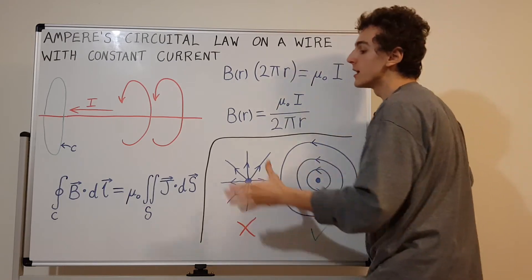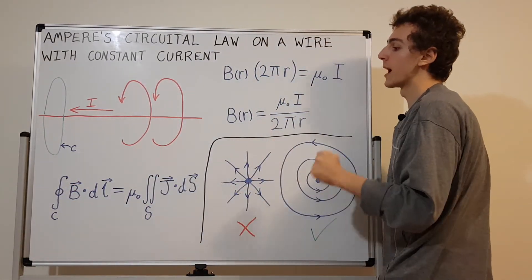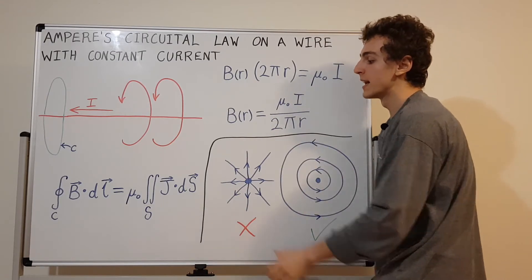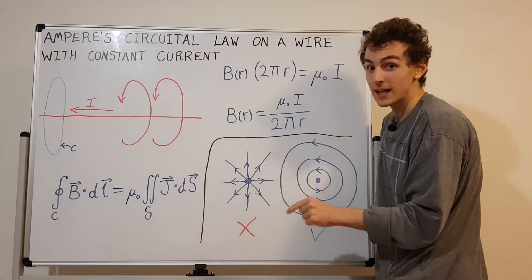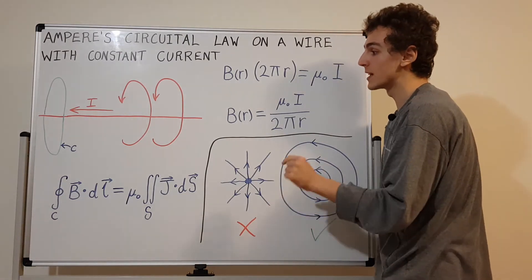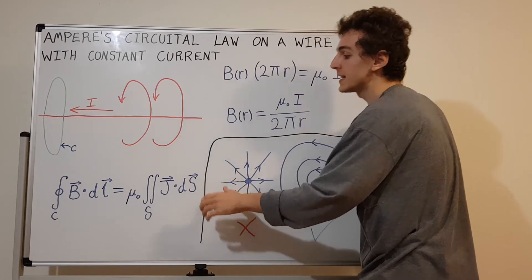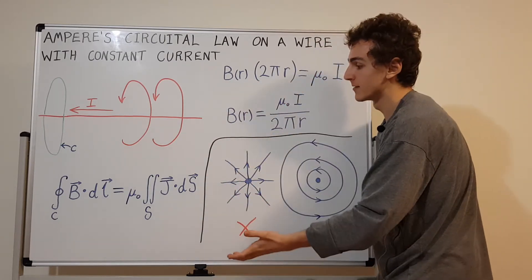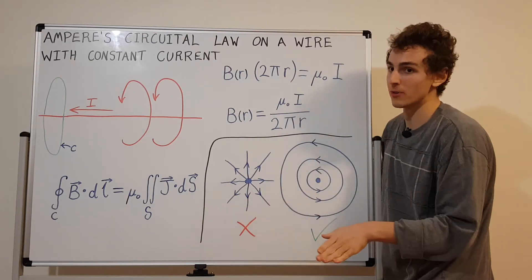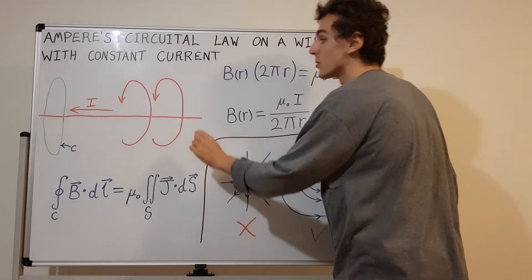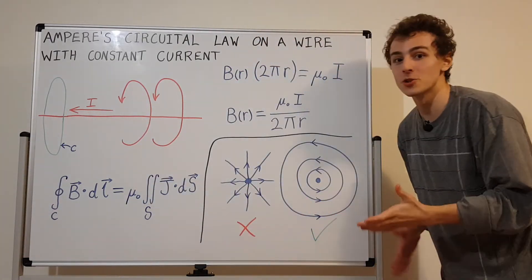Keep in mind that if there were a changing electric field — a non-zero time derivative of the electric field — we would need an additional term, and that's the displacement current term that Maxwell actually added. In this scenario, I'm assuming there's no changing electric field. There does have to be an electric field within the conductor, within this wire, because that's what makes the charges move.